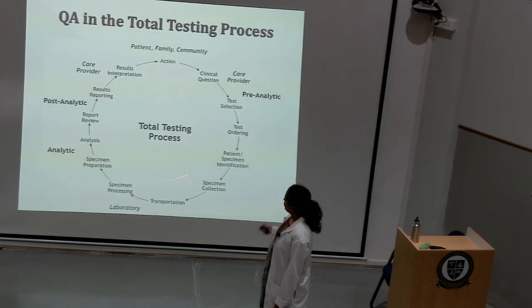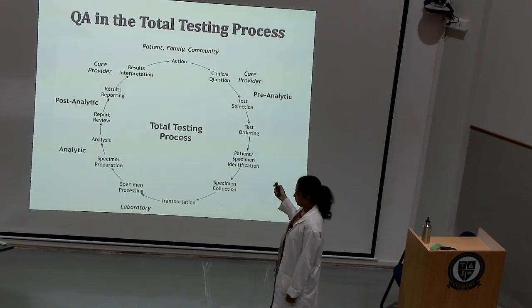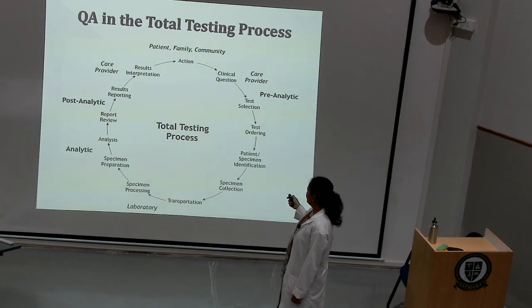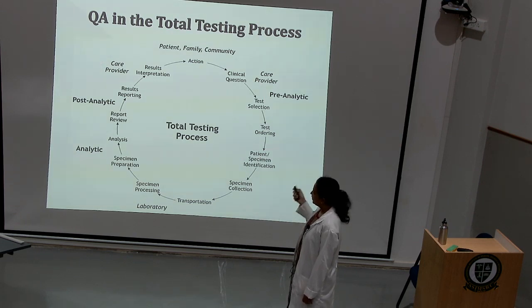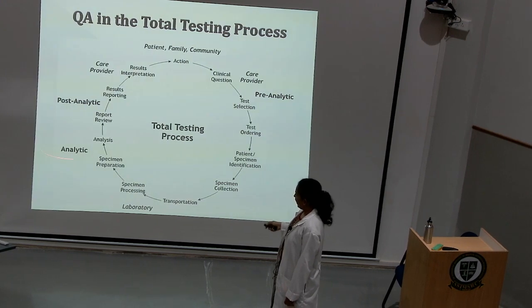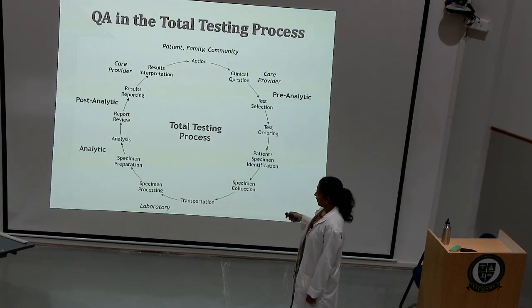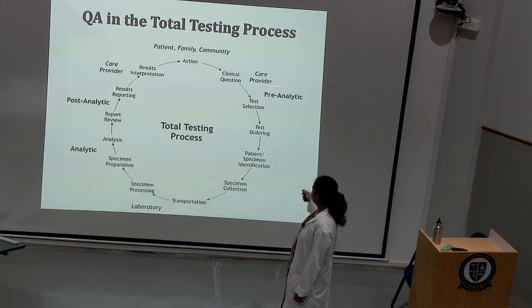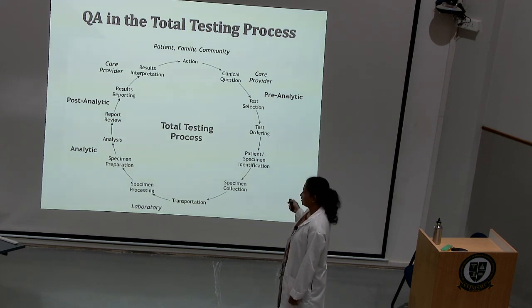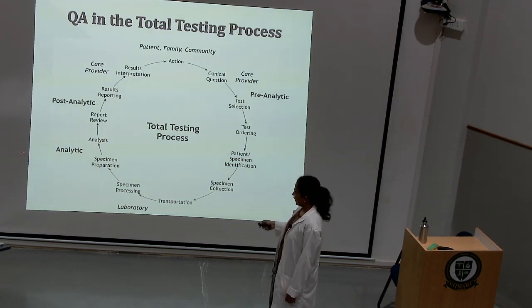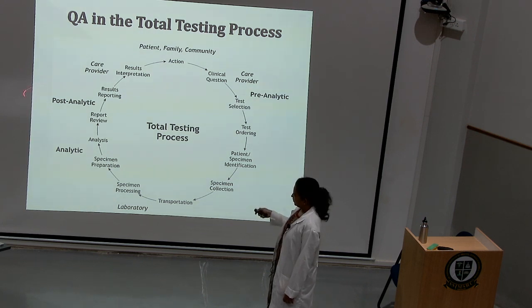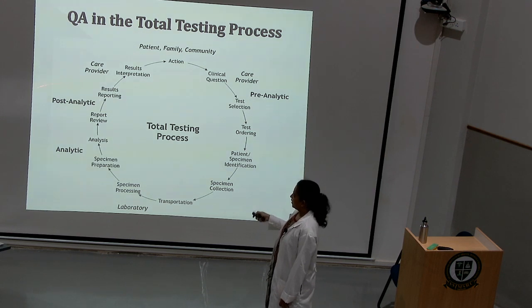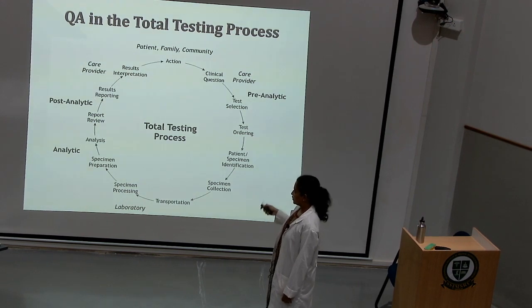This is the quality assurance in the total testing process. When a clinical question is raised by a clinician and a test has been ordered, the entire laboratory process is conveniently divided into pre-analytical phase, analytical phase, and post-analytical phase. The actual testing process limits itself to the analytical phase. Pre-analytical phase includes sample collection, handling, transportation, and storage. The analytical phase is the analysis of the given sample. Once analysis is over, it is documented and sent as a report — all of which fall under the post-analytical phase.